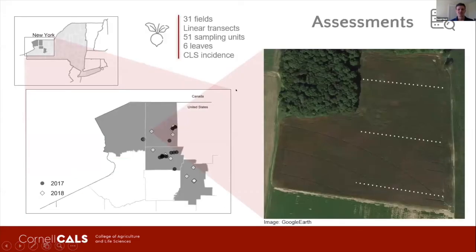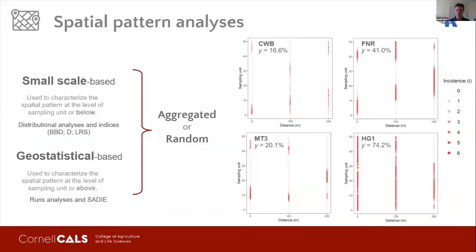To investigate this, we evaluated 31 fields in western New York where linear transects with 51 sampling units were assessed. Each sampling unit was composed of six leaves, which was inspected for the presence or absence of the symptoms. The incidence in these fields ranged from 16 to 74 percent, with a median of 31% incidence.